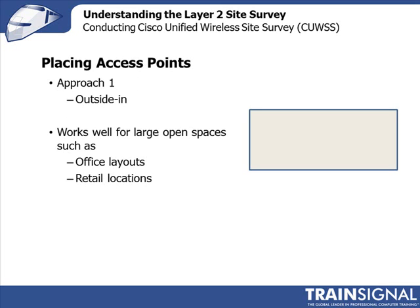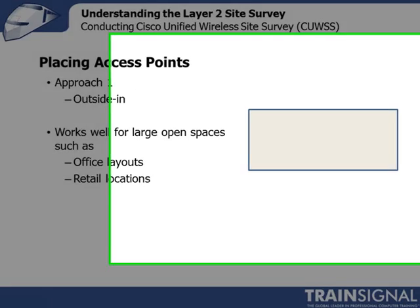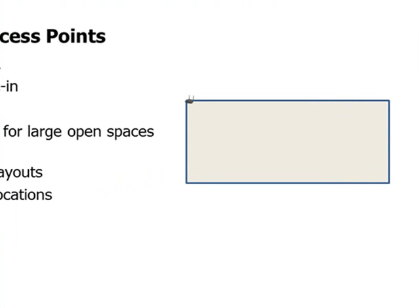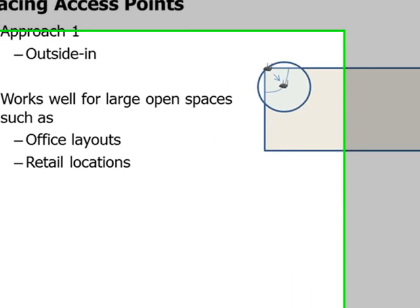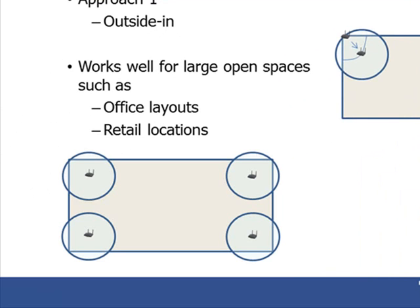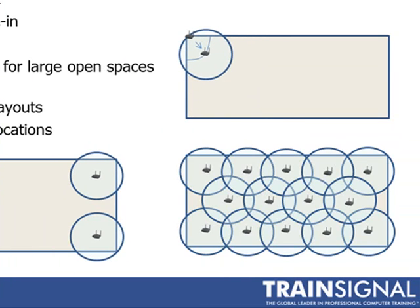With the outside-in approach, if your floor plan is a rectangular shape, you start by placing your access point in one of the corners. You find where the cell boundary is, then move your access point to that cell boundary. Restarting your measurements, you'll see that you now have coverage all the way to the corner — this becomes your first access point placement. Repeat that for all four corners of the floor, then fill in between, allowing 10 to 15% overlap for data applications or 20% overlap for voice in the 2.4 GHz band.